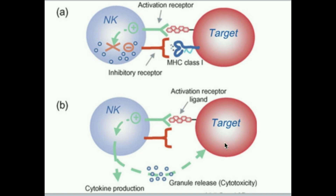If the virus has successfully gotten inside one of our own cells and started reproducing virions, what would happen if a natural killer cell simply did what complement proteins do — insert a membrane attack complex into the membrane so the cell bursts? Well, the virions would all just leave and go infect other cells. So natural killer cells are more organized than simply poking a hole in the membrane and letting the cell blow up.